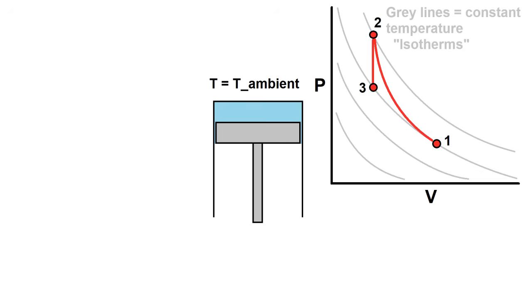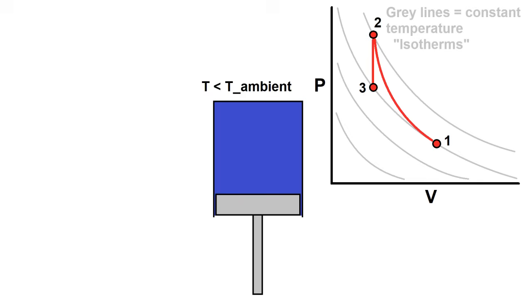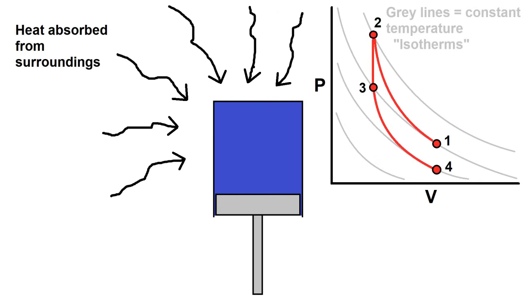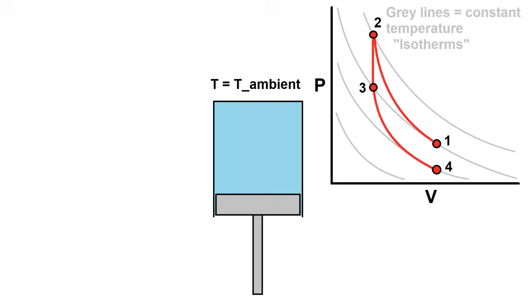Now suppose we do the opposite and suddenly expand the air in the cylinder. This will cause a drop in temperature. Now point four is below ambient temperature, and the cylinder will start absorbing heat from its surroundings, causing a cooling effect.